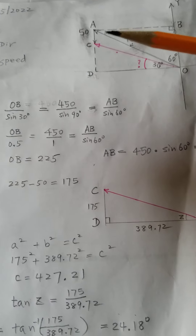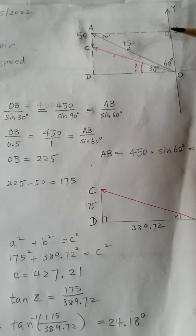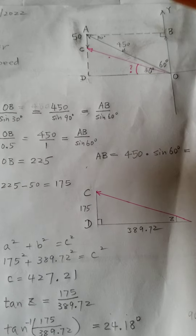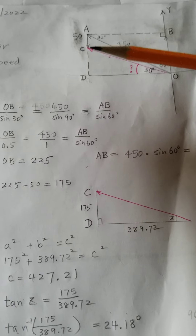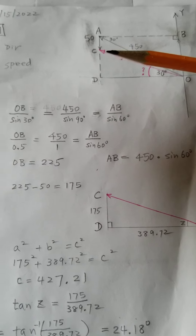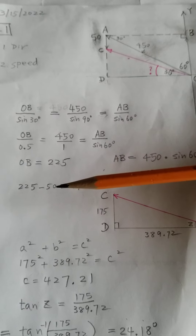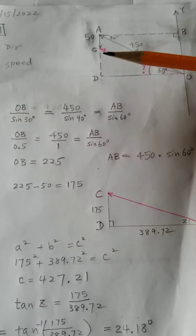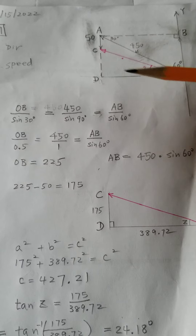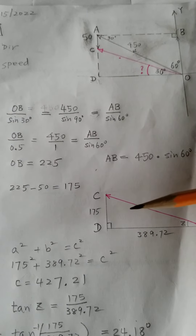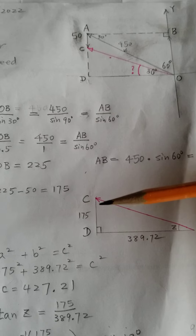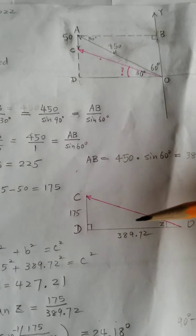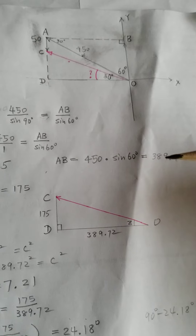Okay, we said this is 225 but it's going in that direction — and it's being pushed back by 50 miles an hour. So we subtract 50, and we get 175. So the small triangle CDO has legs of 175 and 389.72.